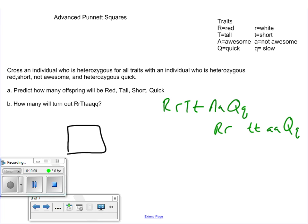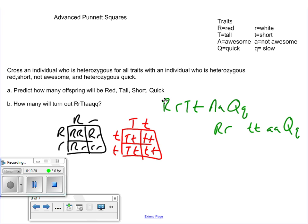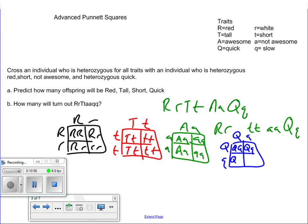First thing you need to do is set up separate Punnett squares for each one of these. So you've got big R, little r, big R, little r, giving big R big R, big R little r, big R little r, little r little r. And then you've got the t's, big T, little t, but we've got little t, little t for the other parent. Then we go to the a's, we've got big A, little a for one parent, but little a, little a for the other parent. And then the last one is the Qs, that's heterozygous in both traits.